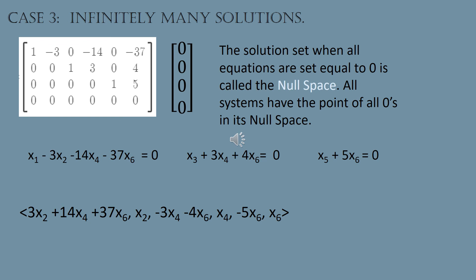The final solution set has x₁ defined by its formula involving x₂, x₄, and x₆; x₂ can be any number; x₃ is defined in terms of x₄ and x₆; x₄ can be any number; x₅ is defined in terms of x₆; and x₆ can be any number. Pick any values for x₂, x₄, and x₆, then follow the formulas to get the other three variables. Any point satisfying those formulas is a solution to the system. I can't draw a graph of this solution set because it's in too high a dimension, but it's some sort of non-curved higher-dimension space.